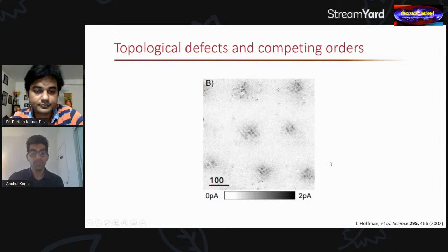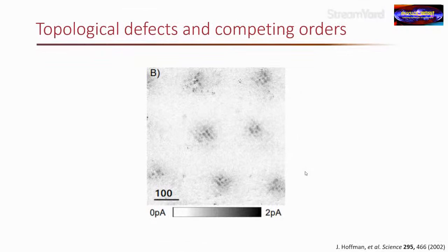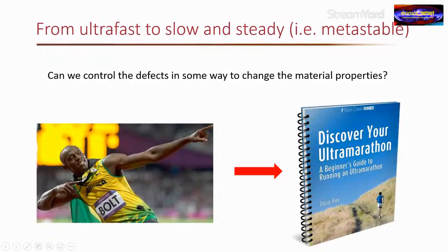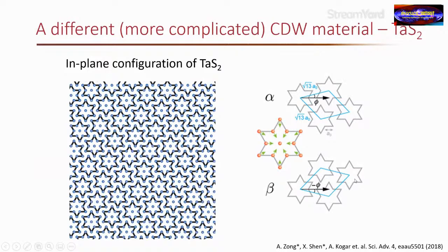This experiment shows two competing orders on such a fast time scale that it's almost irrelevant for the equilibrium properties of the material. So we wanted to move on and ask: can we control the defects in some way? Can we make these things slower and more permanent — going from something very fast to something like a marathon that lasts for a long time?